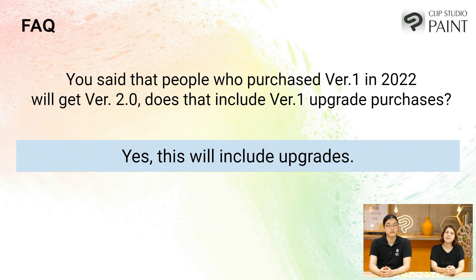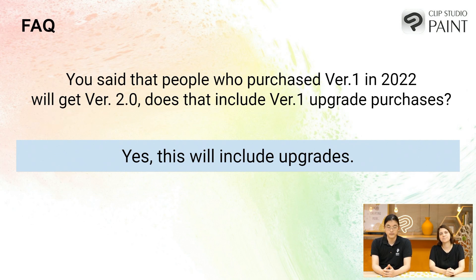That wraps up our FAQ today. If you have any other questions, feel free to send those and we'll keep you updated on any new information as we get closer to the release of version 2.0. If you want to look at the announcements we kept referring to, the links are in the description below. Thank you for taking your time to watch this video. We hope this cleared up any questions you have, and we hope you continue to enjoy creating with Clip Studio Paint and enjoy the next and final version 1 update coming out in December.